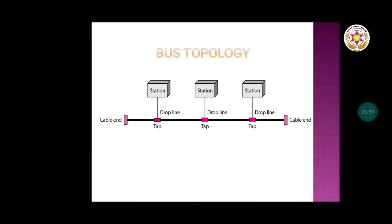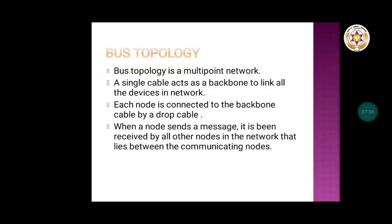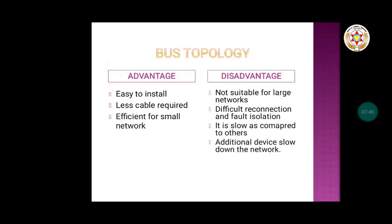When a node sends a message it is received by all other nodes that lie between the communicating nodes. The backbone cable has multiple taps, and the different stations are connected to the same baseline. If one station wants to send to a third station, the message is first received by the second station and then by the third — it is transmitted to each device that lies between the sending and receiving end.